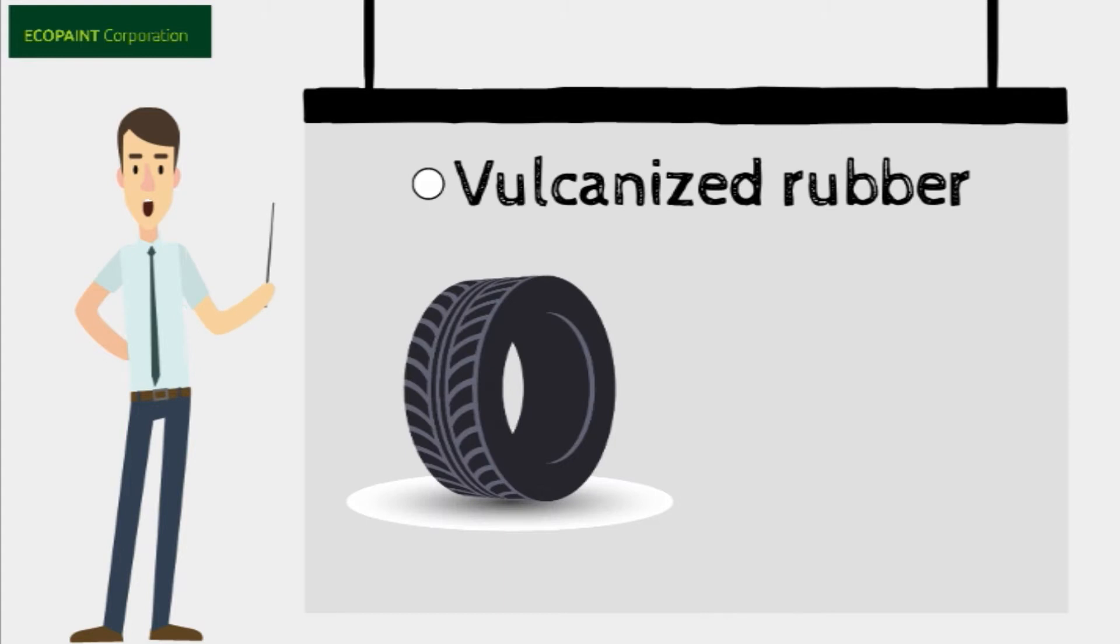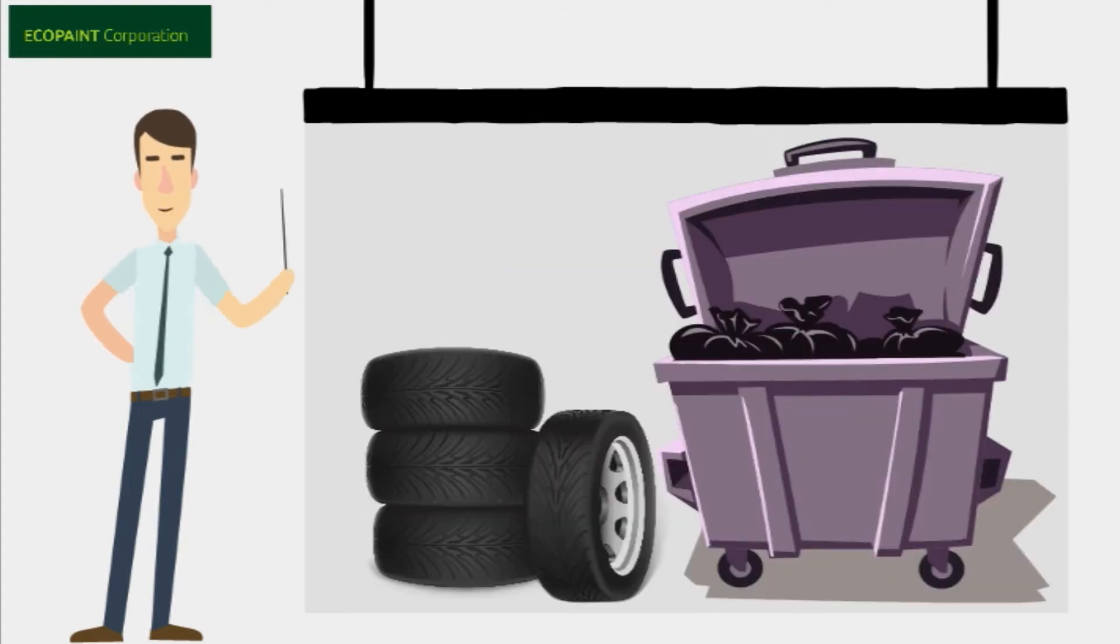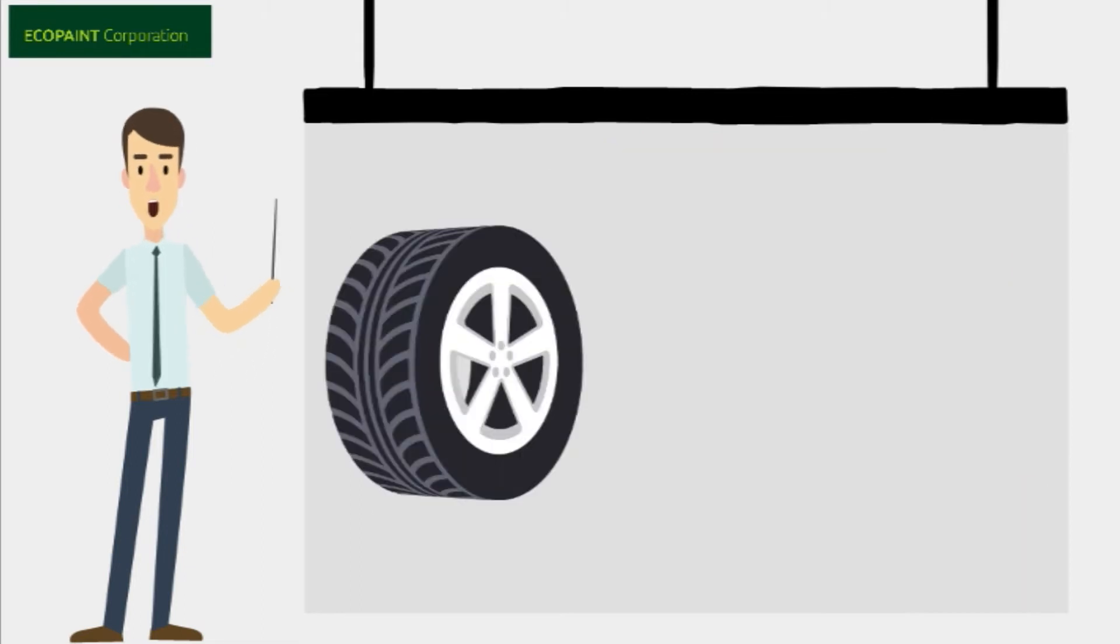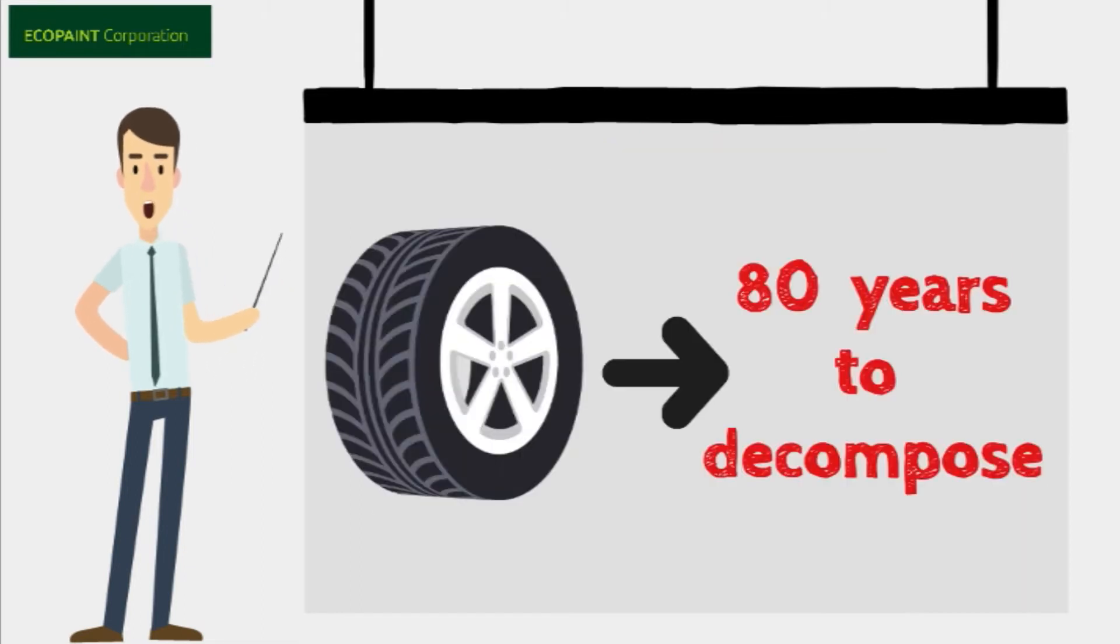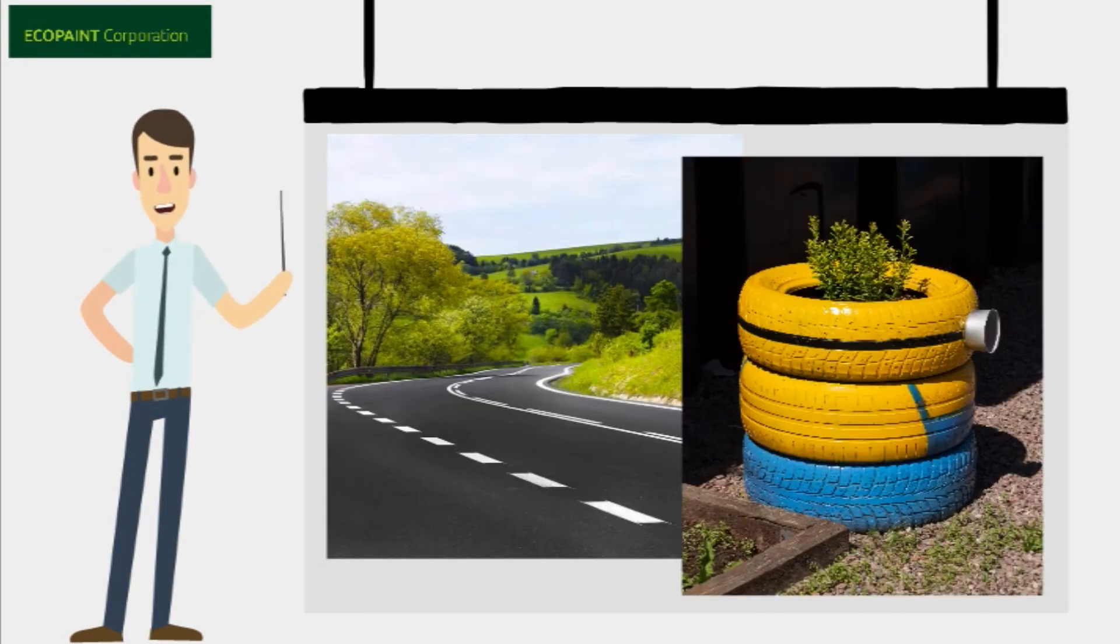Tires are made of vulcanized rubber and are very bad for the environment because they are often discarded incorrectly. Tires take on average 80 years to decompose in the environment. Recycling and reusing tires are efficient ways to mitigate this environmental impact.